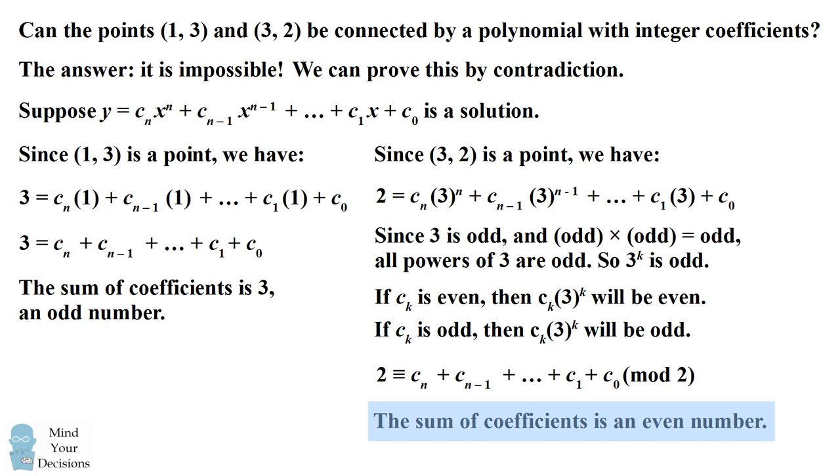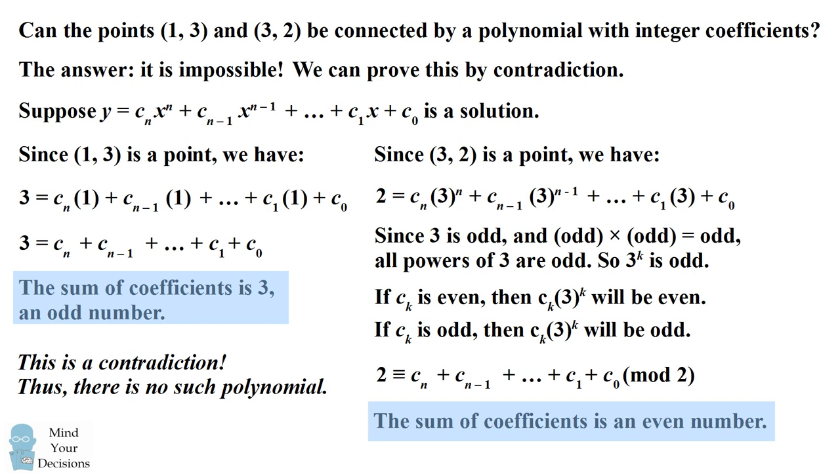So on the one hand we have the sum of the coefficients being an even number, and on the other hand we have the sum of the coefficients being an odd number. This is impossible. This is a contradiction to say the sum of the coefficients are both even and odd at the same time. Therefore our assumption that we did find a solution is not correct, and thus there is no such polynomial that can pass through these two points with integer coefficients. Did you figure it out?